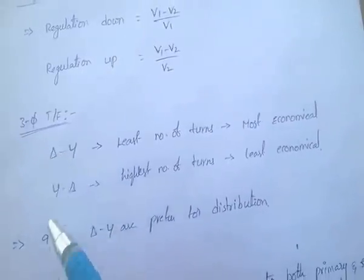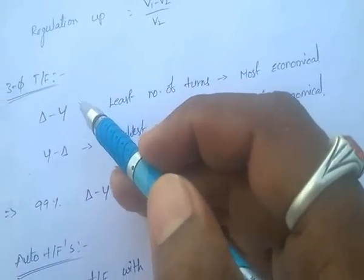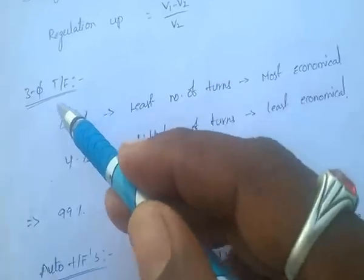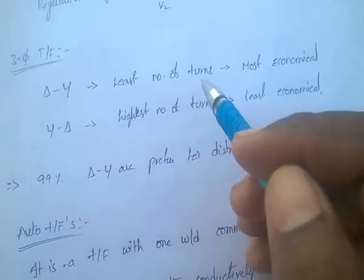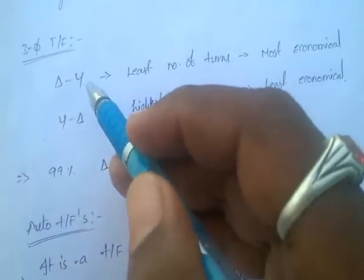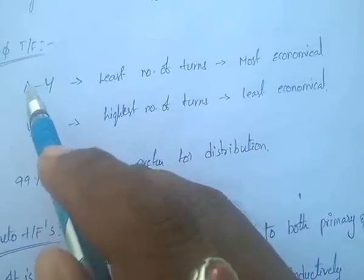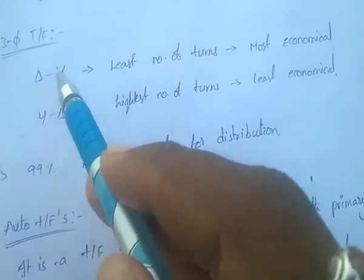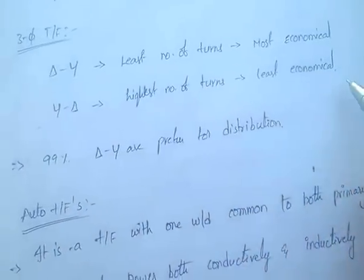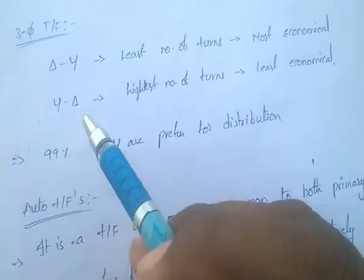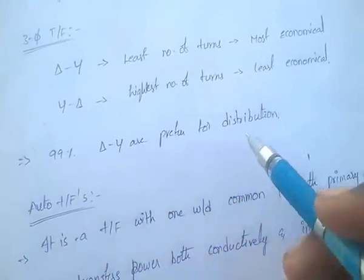Coming to three-phase transformers: the connection types are delta-delta, star-star, star-delta, and delta-star. Among all these, delta-to-star has the least number of turns and is most economical. Star-to-delta has the highest number of turns and is least economical. Ninety-nine percent of distribution transformers are of the delta-to-star type.